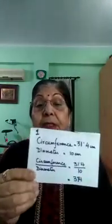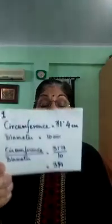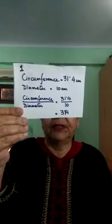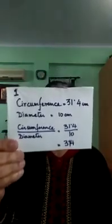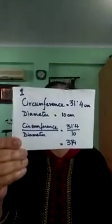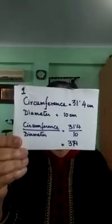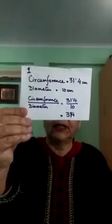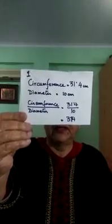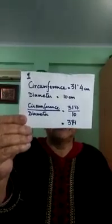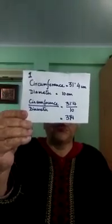For the first circle, which is blue in color, when I measure the circumference, it has come out to be 31.4 centimeters. The diameter of the circle is 10 centimeters. Circumference upon diameter is equal to 31.4 upon 10, which gives 3.14.